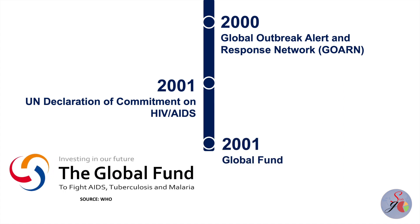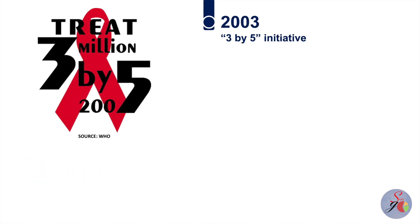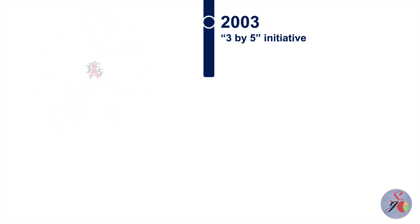The Global Fund to Fight AIDS, Tuberculosis and Malaria — a new partnership and funding mechanism initially hosted by WHO in 2001 — was created in collaboration with other UN agencies and major donors. In 2003, WHO launched the 3x5 initiative, which aimed to bring treatment to 3 million people living with HIV by 2005, laying the groundwork for reaching 13 million people infected with HIV on antiretroviral treatment by 2013.